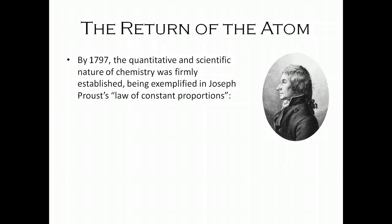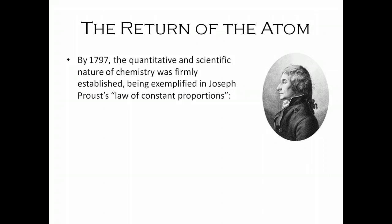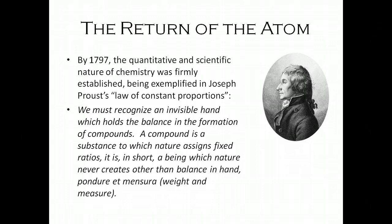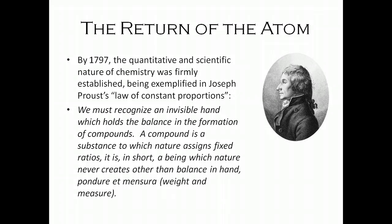A lot of science was done back then too. So by 1797, the quantitative and scientific nature of chemistry was firmly established, being exemplified in Joseph Proust's Law of Constant Proportions. He stated: 'We must recognize an invisible hand which holds the balance in the formation of compounds. A compound is a substance to which nature assigns fixed ratios.' What he's saying is that compounds always have the same proportions of elements in them, the same percentages.